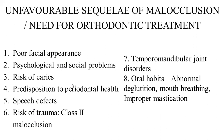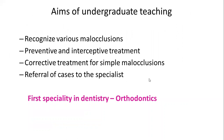The unfavorable sequelae of malocclusion include poor facial appearance, psychological and social problems, a risk of caries due to difficulty maintaining proper hygiene, predisposition to periodontal problems, speech defects, risk of trauma to the upper anterior teeth especially in Class II malocclusion patients where teeth are proclined, temporomandibular joint problems, and oral habits. The aim of undergraduate teaching is to train students to recognize different malocclusions and advise preventive and interceptive treatment, perform corrective treatment for simple malocclusions like spacing, and refer complex cases to a specialist.